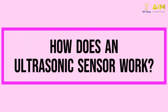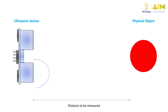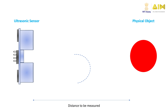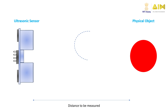Let's find out how an ultrasonic sensor measures the distance to an object. We have an ultrasonic sensor on the left and an object at a distance in red color as shown on the right side. The transmitter emits an ultrasonic sound wave, which hits the object and is reflected back. The reflected wave is then received by the receiver. The time it takes for the sound wave to travel from the transmitter to the object and back to the receiver is used to calculate the distance between the sensor and the object.